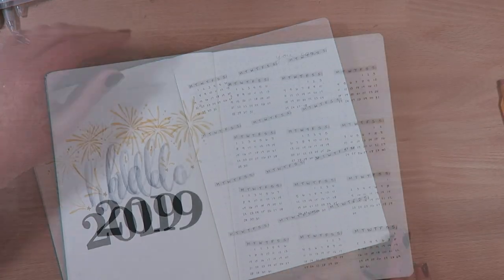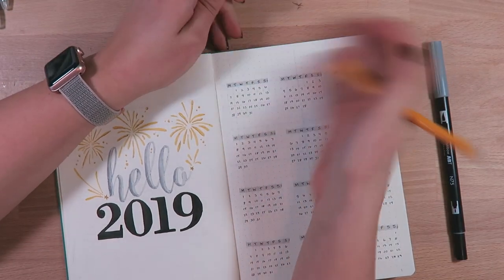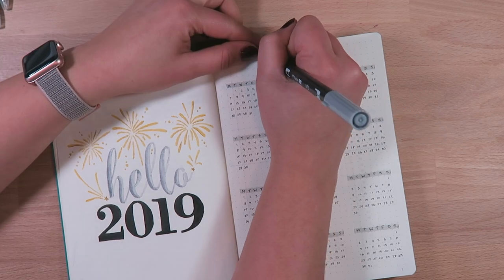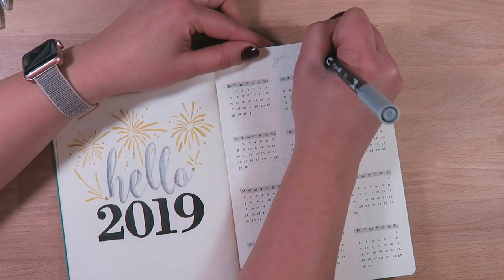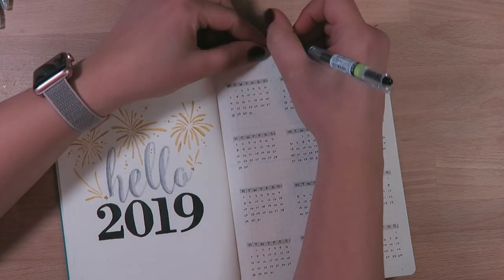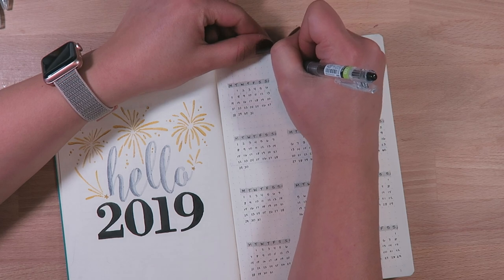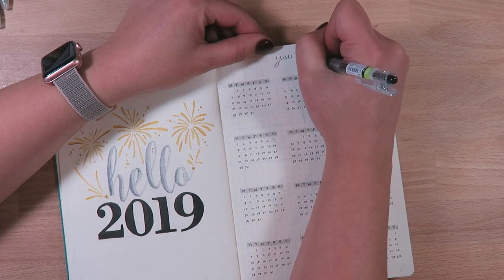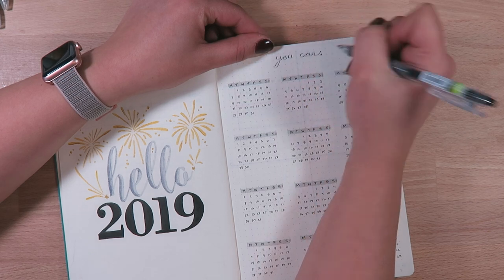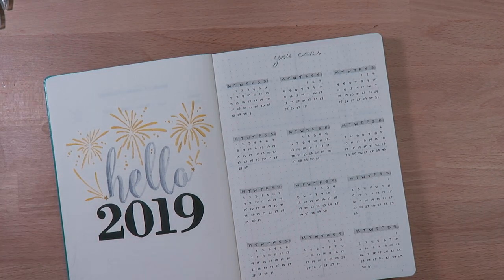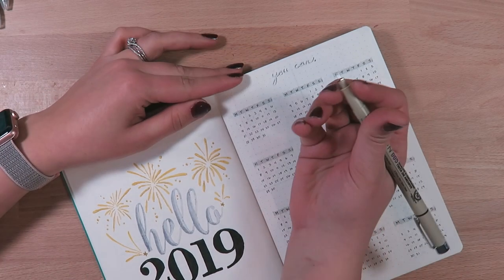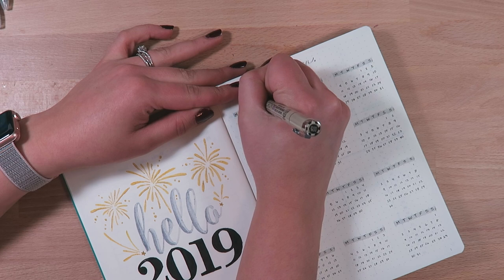I jumped ahead and filled the rest of those months in off camera. Instead of writing 'year at a glance,' I wanted to put something a little bit more meaningful up at the top like a quick little quote. The quote that I chose is just a really simple two words: 'you can.' I felt like that would be motivating for me to just remember that I can do it, whatever I'm putting my mind to.